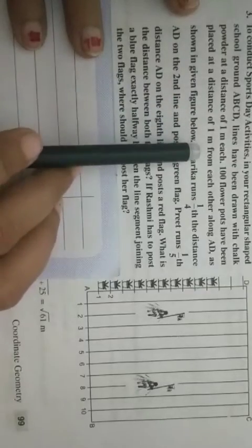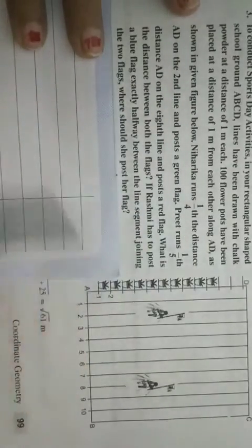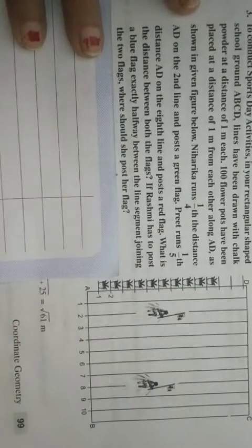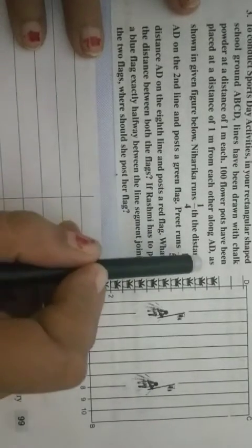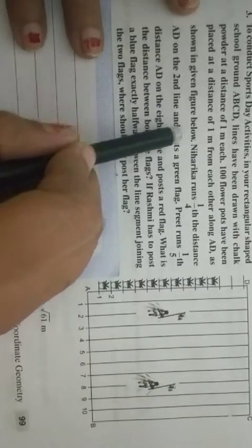100 flower pots have been placed at the distance of 1 meter from each other along AD. So, this is your AD. Means Y axis. Now, as shown in given figure below.